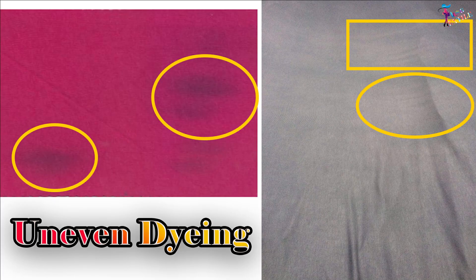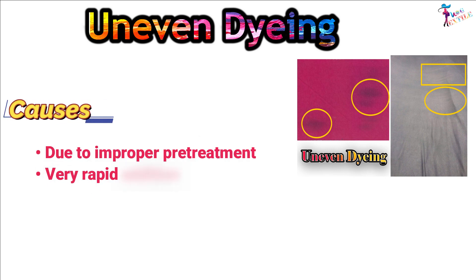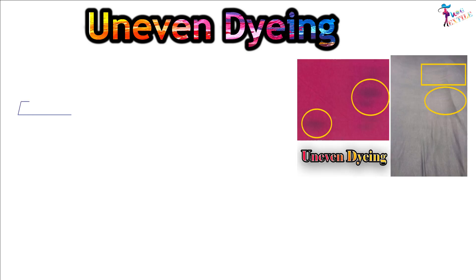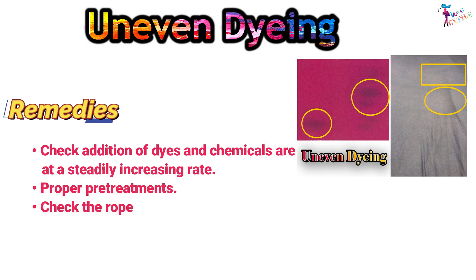Uneven Dyeing. Causes: Due to improper pre-treatment, very rapid addition of dyes and chemicals, and lack of controlling dyeing parameters. Remedies: Check that addition of dyes and chemicals are at a steadily increasing rate, ensure proper pre-treatments, and check the rope turn over time.